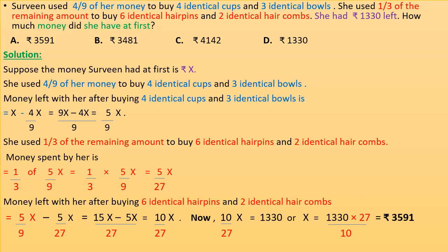Sarveen used 4/9 of her money to buy 4 identical cups and 3 identical balls. She then used 1/3 of the remaining amount to buy 6 identical hair pins and 2 identical hair combs. She had rupees 1330 left. How much money did she have at first? Suppose the money Sarveen had at first is rupees x. She spent 4/9 x, so money left is x − 4/9 x = 5x/9.